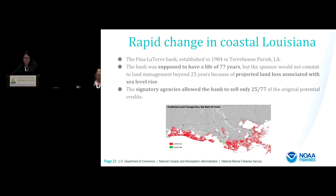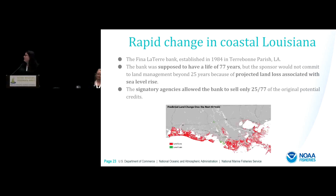The Louisiana coastline is highly dynamic and susceptible to subsidence. In 1984, the Fina La Terre Bank was established with a proposed life of about 77 years. But due to projected loss, the sponsor could not commit to land management beyond 25 years, and could only sell 25/77ths of their original potential credits. This example also illustrates what happens when you don't take climate change into account.